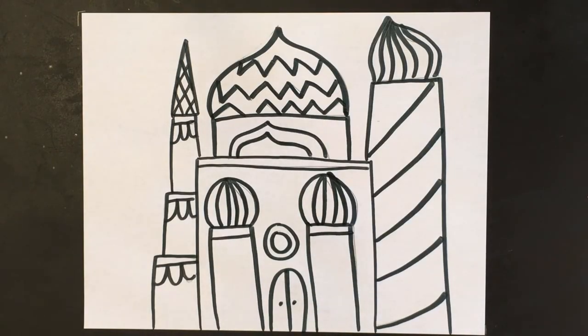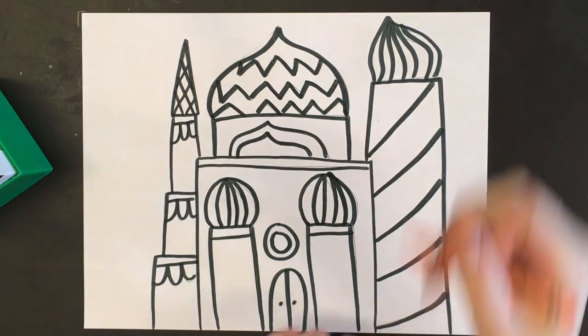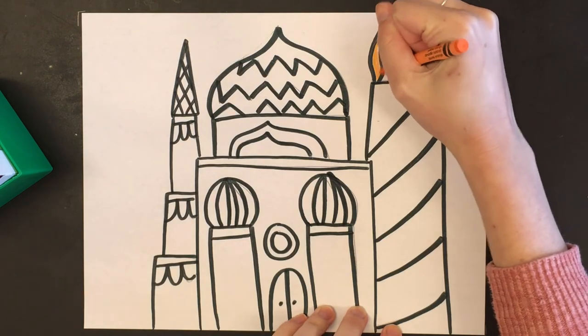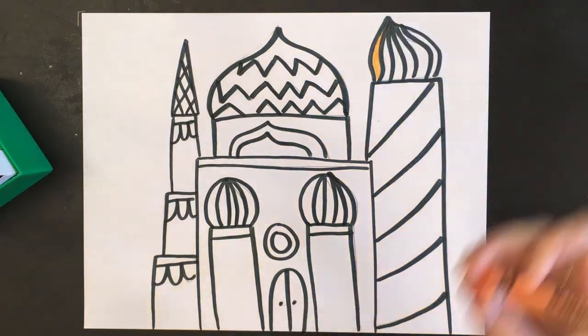I'm all finished tracing, and now I'm ready to color my project. Just like St. Basil's Cathedral in Moscow, Russia, we want to make our domes nice and vibrant with bright colors. When I pick the colors today, I'm going to make sure they really catch your attention. I'll just do my best coloring to color my entire project.